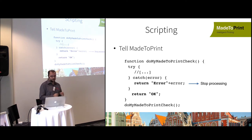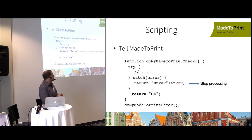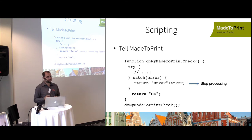If something goes wrong — for example, images are not linked to a specific file server — you can return an error from your script. If you return a string beginning with 'error', the document will stop processing in Made to Print, and everything after 'error' becomes the error message. If you work with Switch, you can route that error message back into your workflow, or K4/WoodWing will surface it to the user.